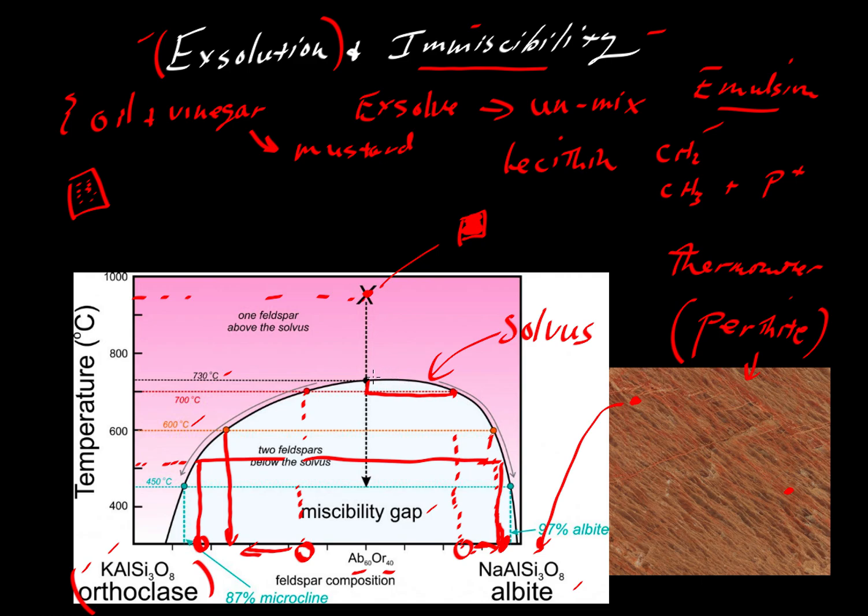One other term that's not shown here, the very top of this curve, the highest temperature that you can have along the solvus would be referred to as the consolute point. So let's write that over here, consolute point. And all that means, con means with, solute means to dissolve or create a solution. Above the consolute point, that would be the temperature above which no matter what bulk composition you would have, you would have a single feldspar composition. There would be no separation into orthoclase or albite-rich components. You would have a single feldspar over here. Anywhere in this pink area, we would have a single feldspar.